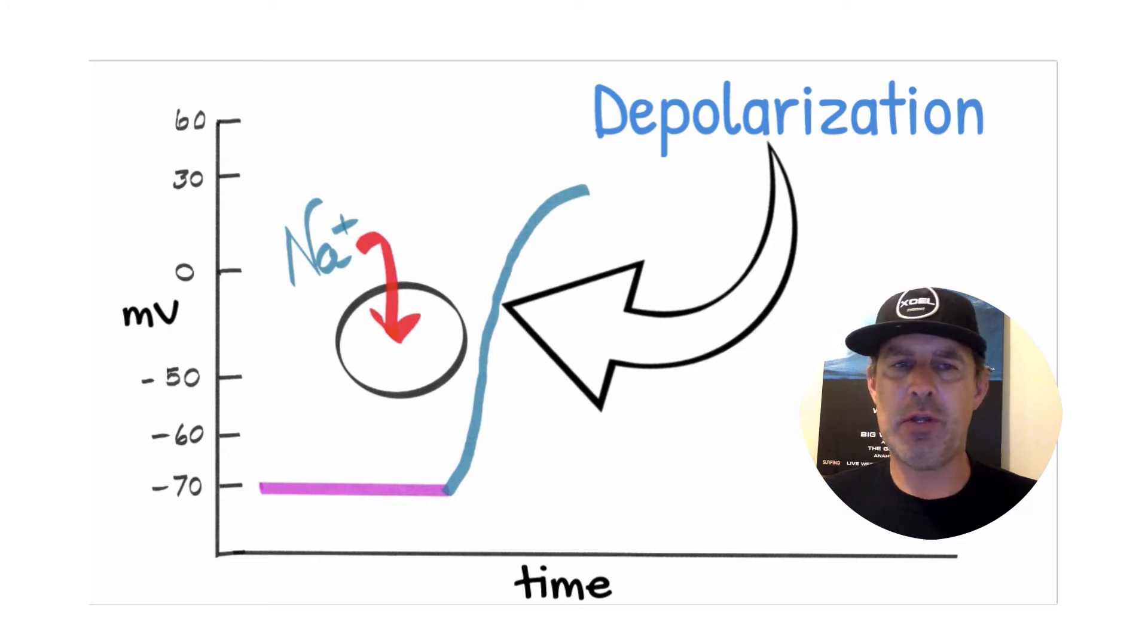So if we think back to previous videos, at the resting state, we've suggested that the interior of the cell is negative, and the exterior of the cell is positive. And that's polarized because it has two different ends of the spectrum between the outside and the inside of the cell. That is to say, positive and negative, just like a battery, which is polar.